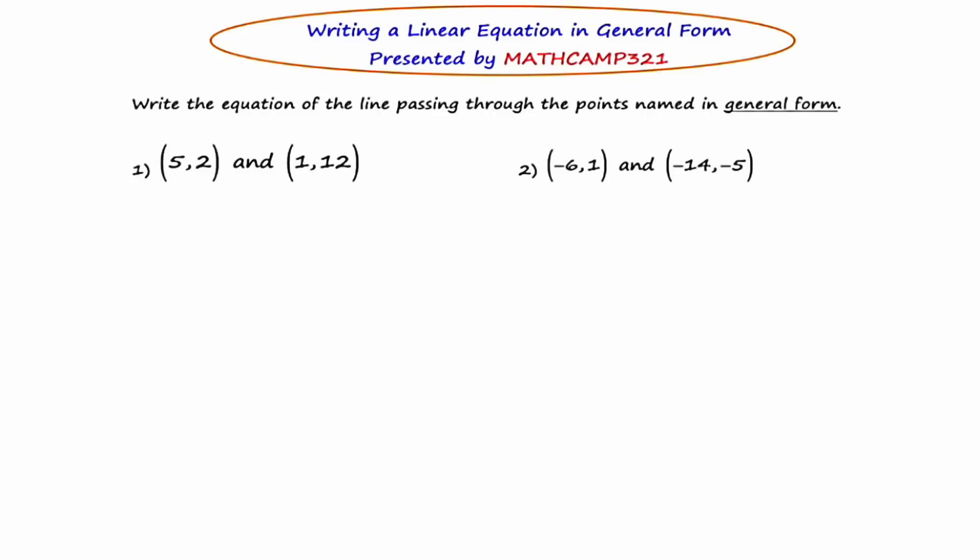Hey there, this is MathCamp321 presenting a lesson on writing a linear equation in general form. The directions are: write the equation of the line passing through the points named in general form. To start, let's review what general form actually is. I'll write this at the top right where there's a little bit of free space. General form looks like this: AX plus BY plus C equals zero.